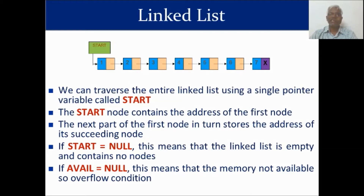An important terminology in linked list is 'start' — it is a single pointer variable which stores the address of the first node. In arrays, the base address of the first element is available in the array name, so we can easily traverse. But in a linked list, the first element's address is not automatically available, so we use the special pointer 'start'. The next consecutive elements are traversed using each node's pointer field.